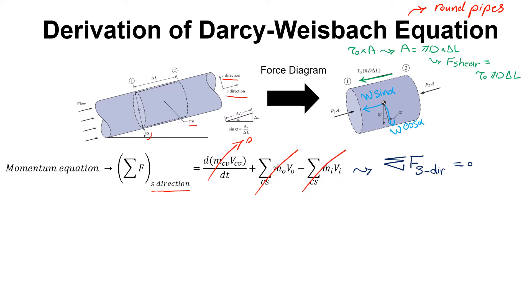The only thing I need to do is write down the force equilibrium to find HF, the head loss — which will be my Darcy-Weisbach equation. So: F_pressure minus F_shear minus F_weight equals zero. The shear stress force has a negative sign because its direction opposes the positive S direction, and W·sin(α) likewise opposes the positive S direction.